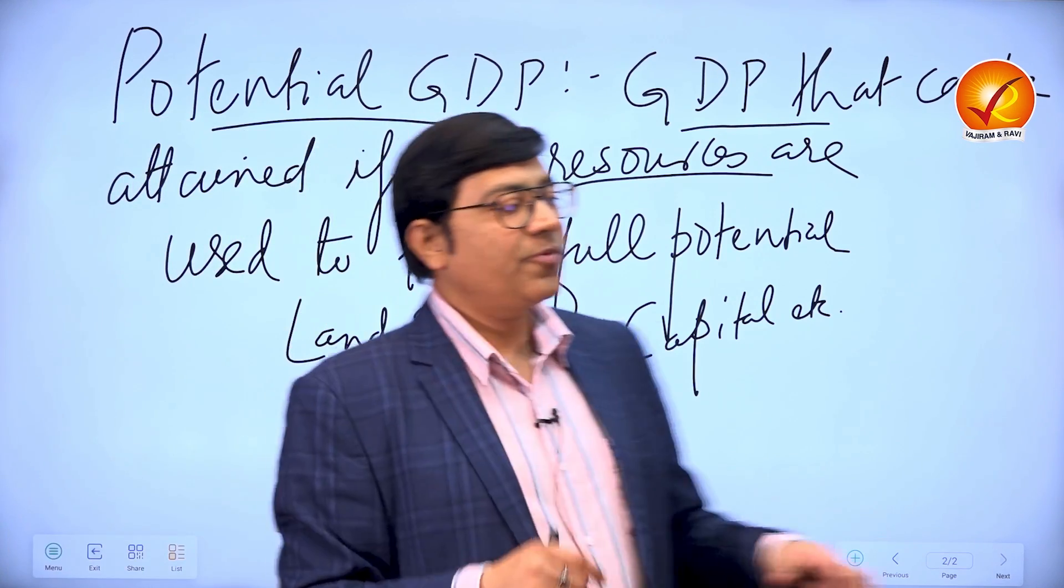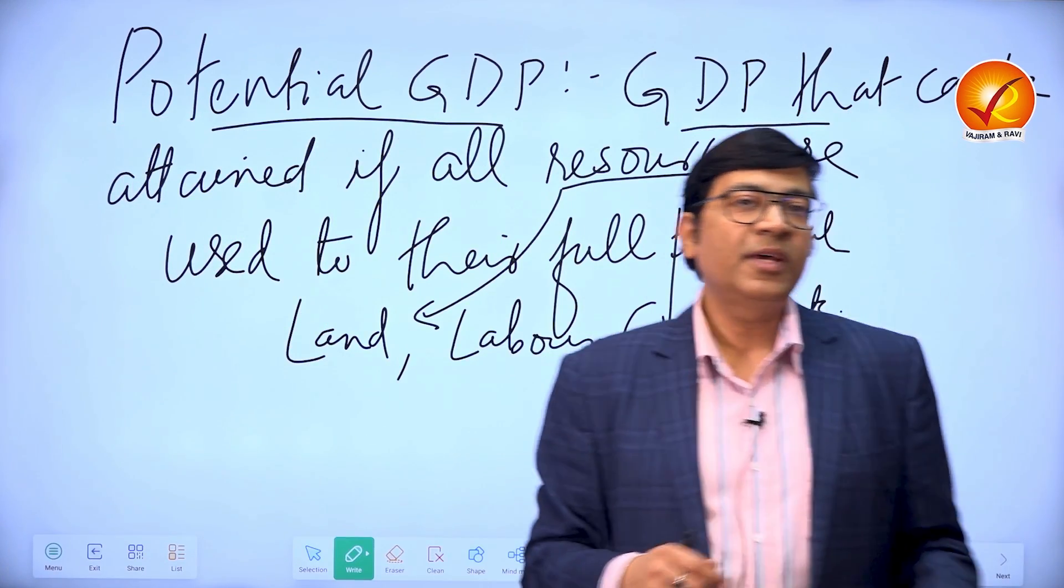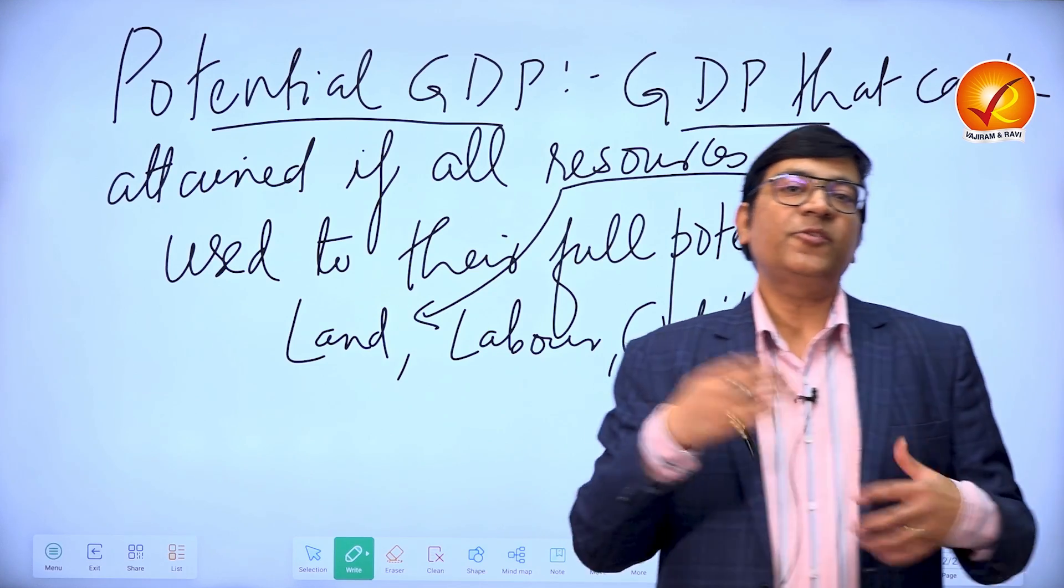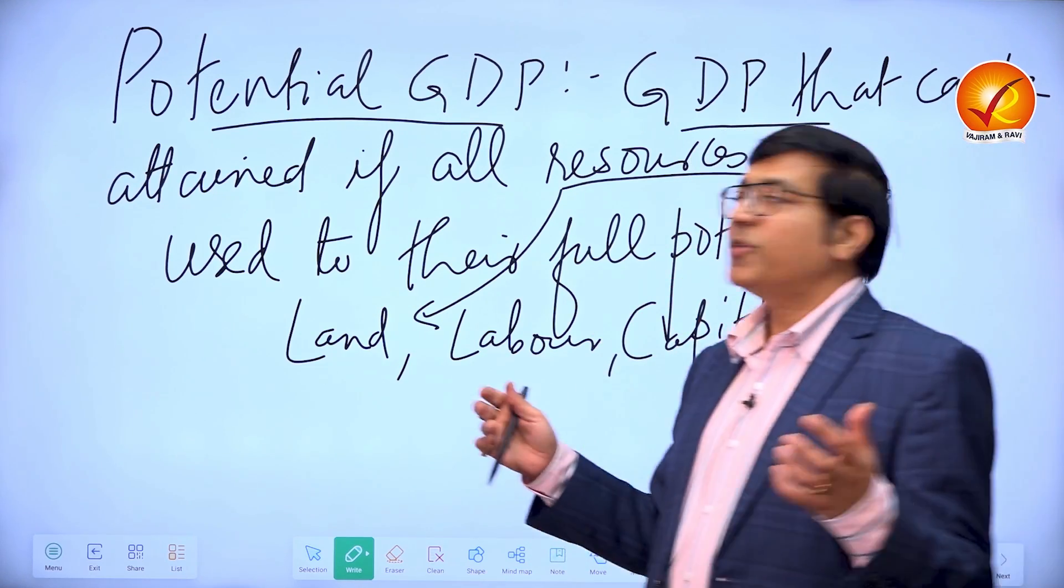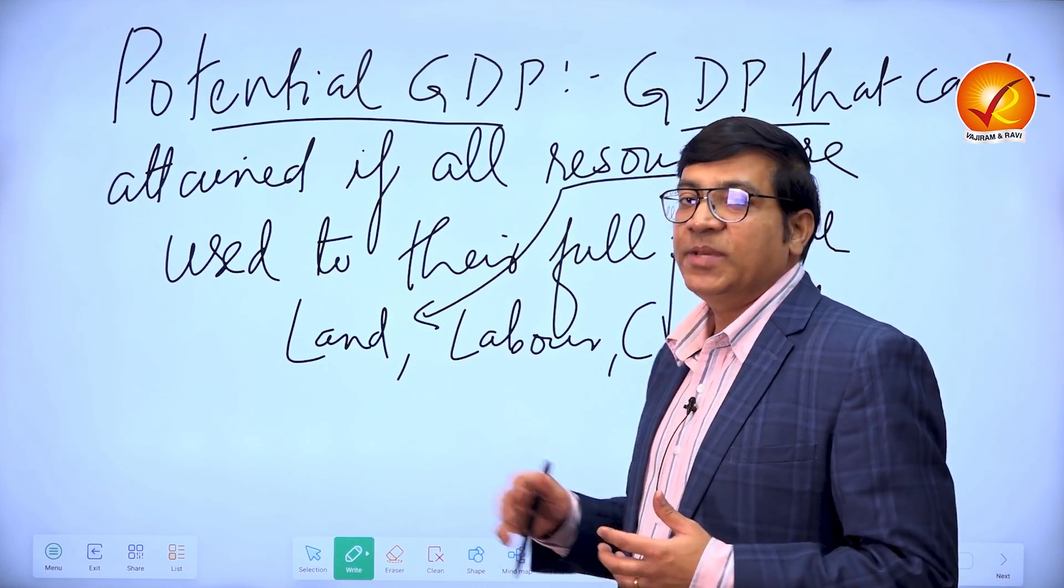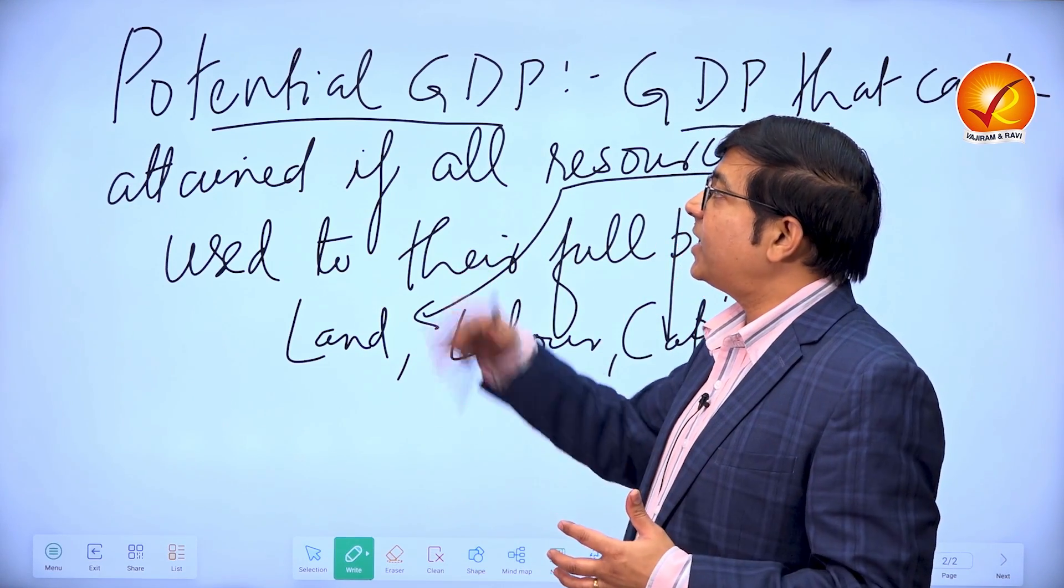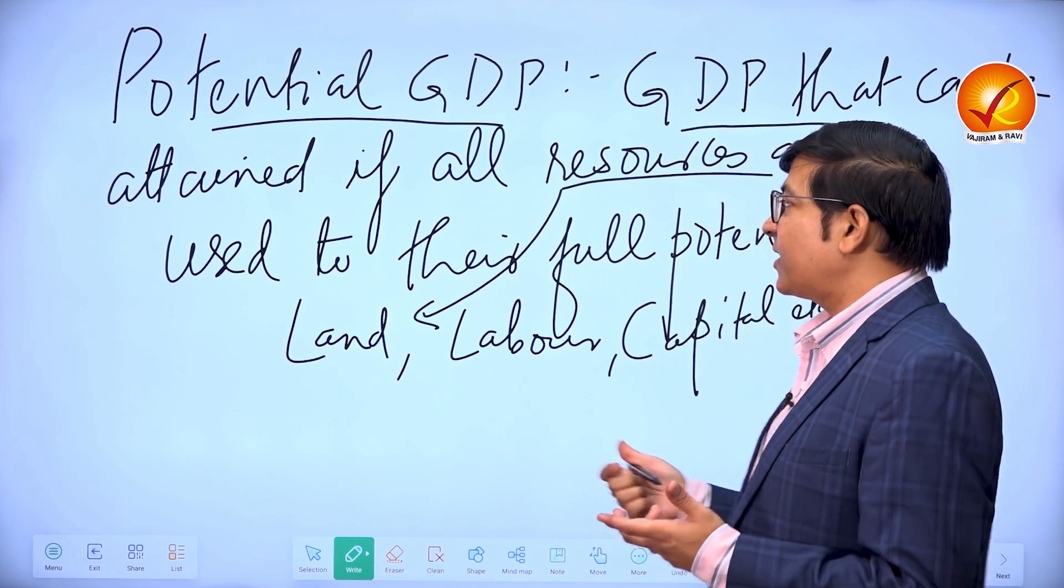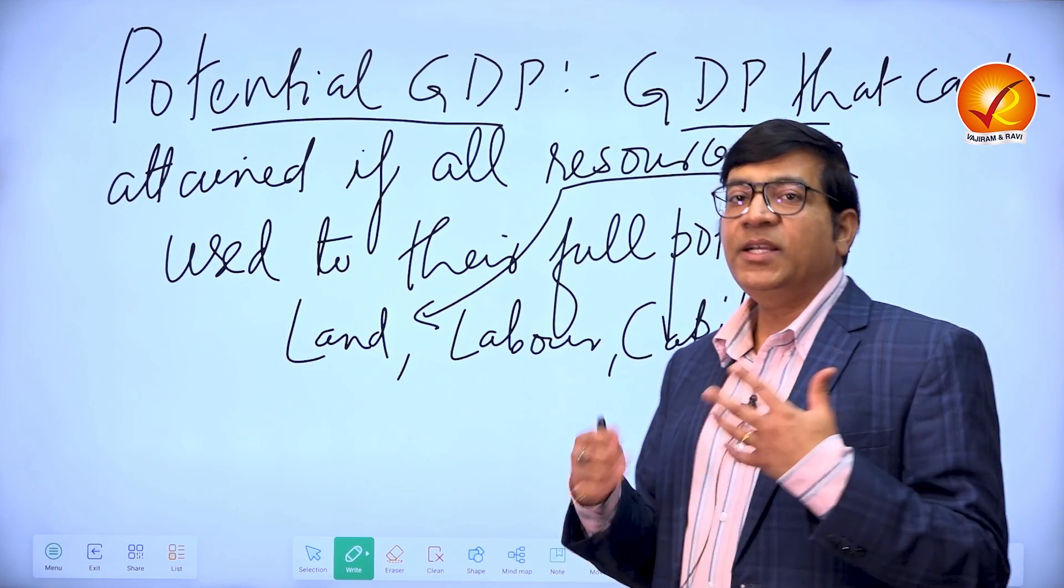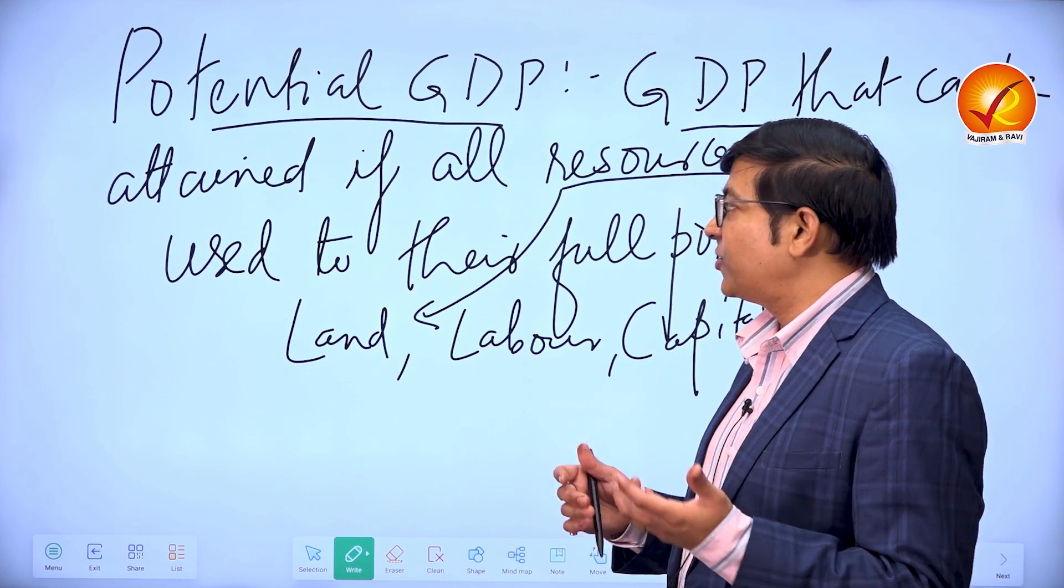Now the question that was asked in this exam was, how can a country achieve its potential GDP? As I mentioned, generally the potential GDP would be lower than the actual GDP. How can a country take its GDP to its potential level? So what kind of examples can be given? Well, there are various ways of handling such kind of an issue.